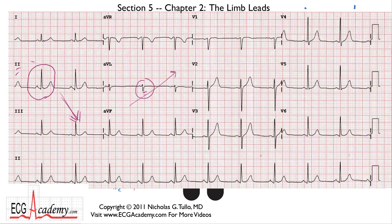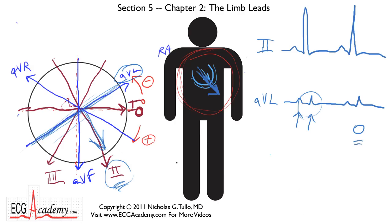So the basic concept of a lead is that you can get a sense of what direction things are traveling. By switching leads, you can get a better electrical view of the heart, because the signal is traveling along that lead rather than perpendicular to it.